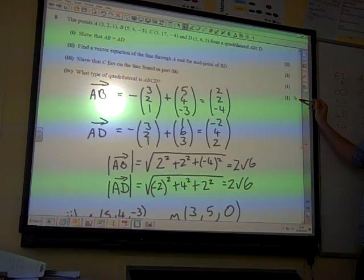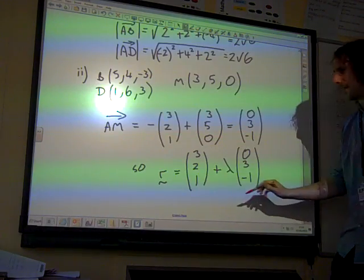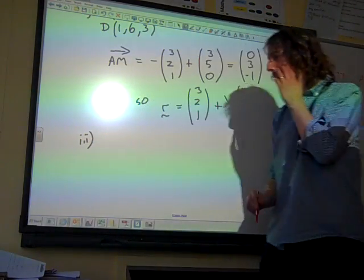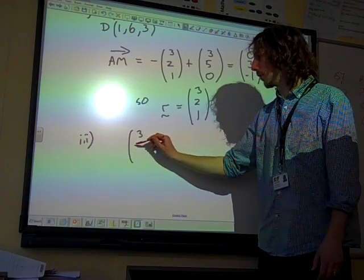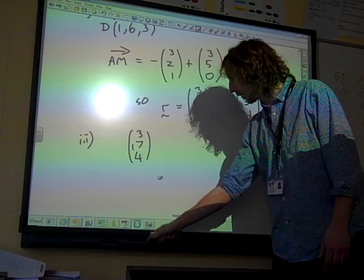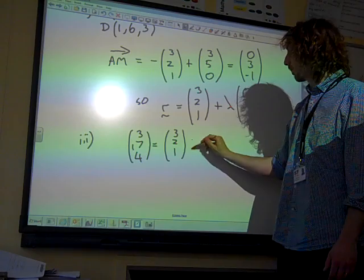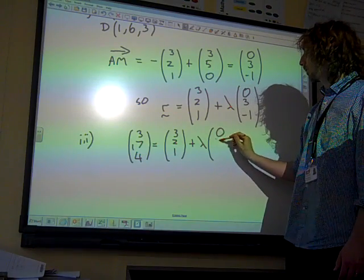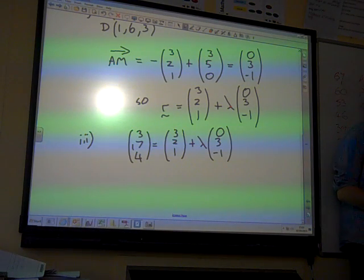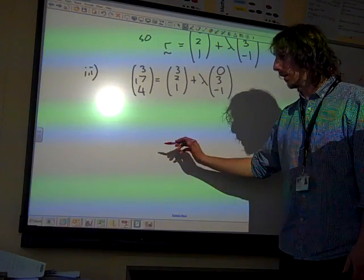OK, part 3. Show that C lies on the line found in part 2. Well, this is just about, this was only one mark. Show that the point 3, 17, 4 lies on that line. All we need to do now is to find a value of lambda that satisfies all three of those components. So I just checked them.